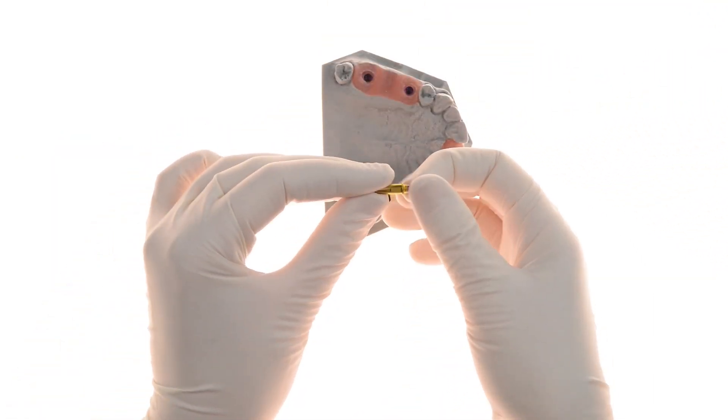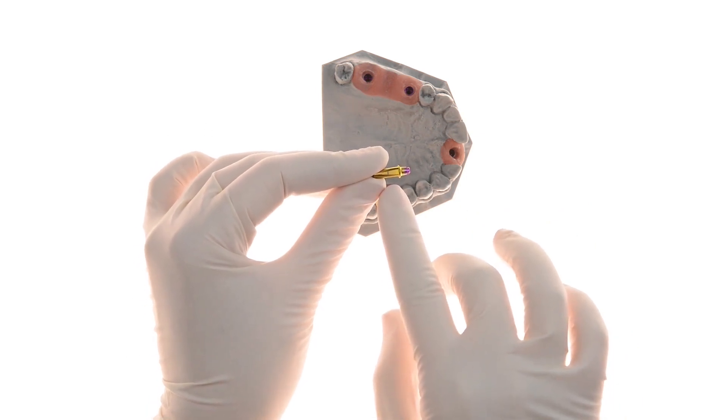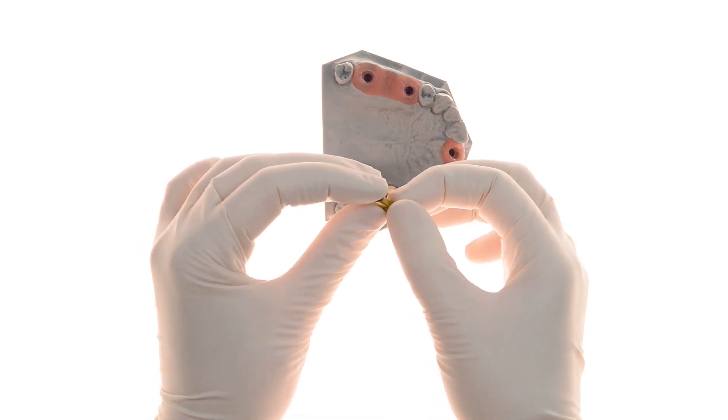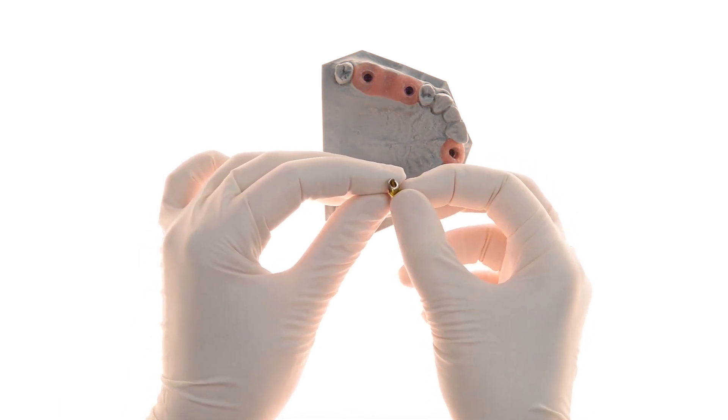For the adjustable EasyBase, the 10mm pillar may be customized to the desired length. Here you can see the EasyBase post-adjustment. Once customized, the adjustable EasyBase is directly scanned.